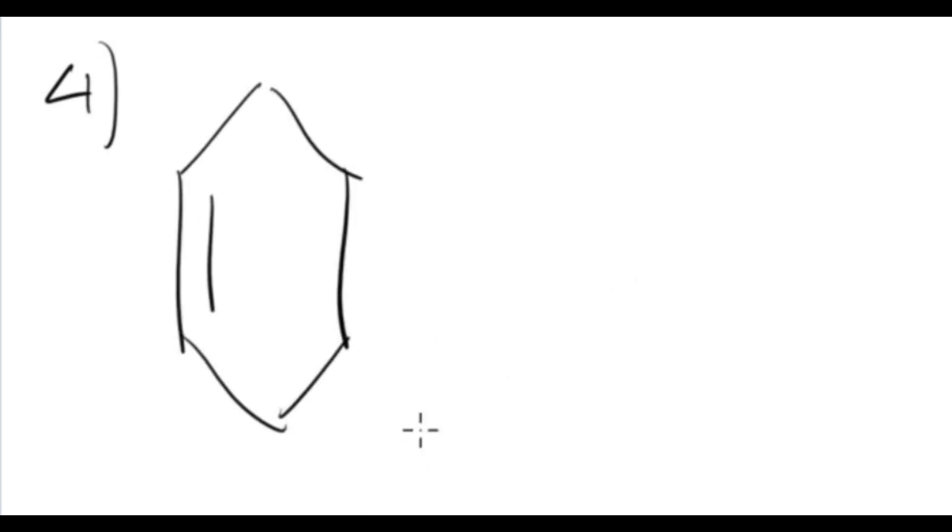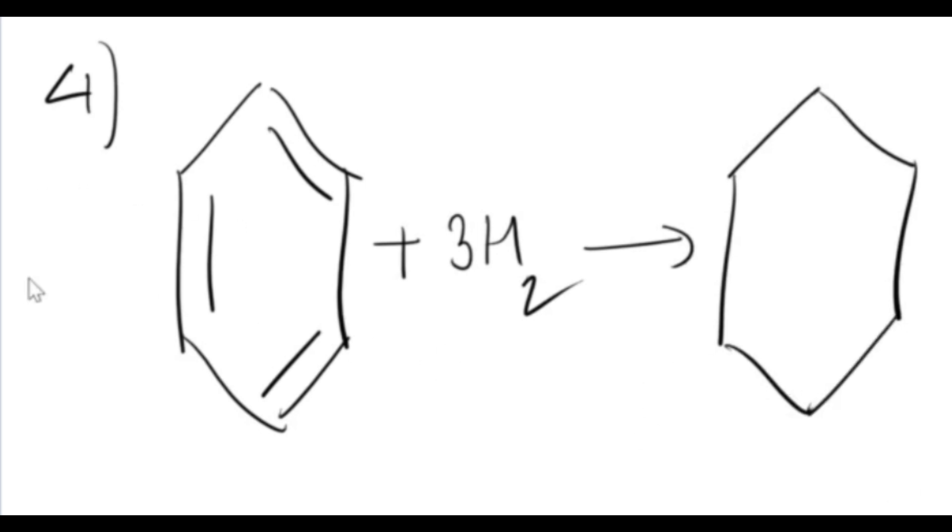And the last question was you had to show the hydrogenation of benzene. So benzene has three double bonds, so you need three molecules of hydrogen and then you'll get the product. The one and only product is cyclohexane because it's a cyclic structure, there are no double bonds, it's an alkane and it is six carbons, so it's hexane.